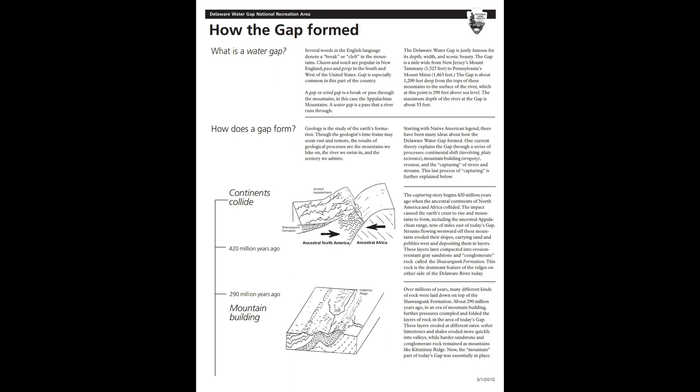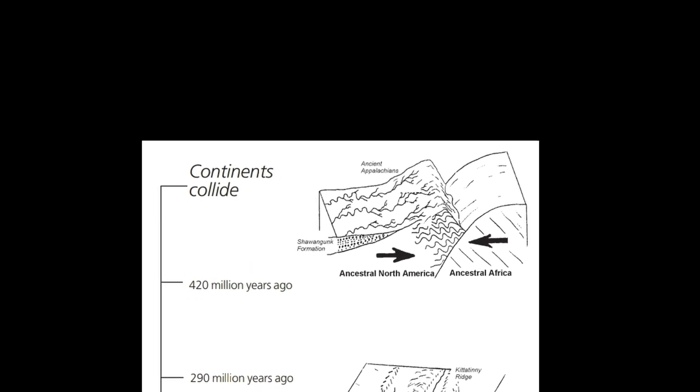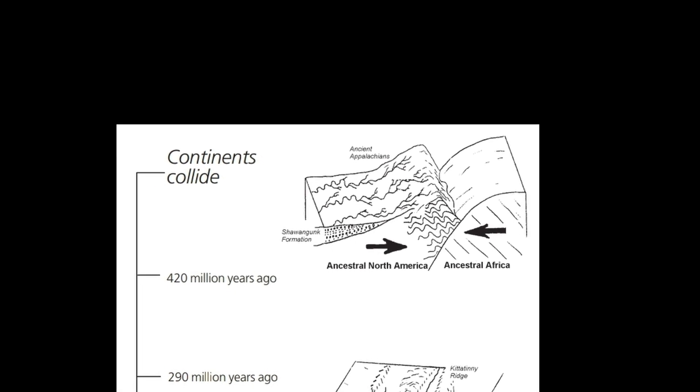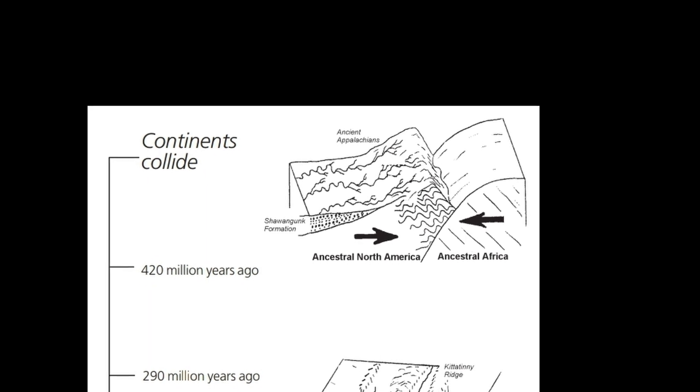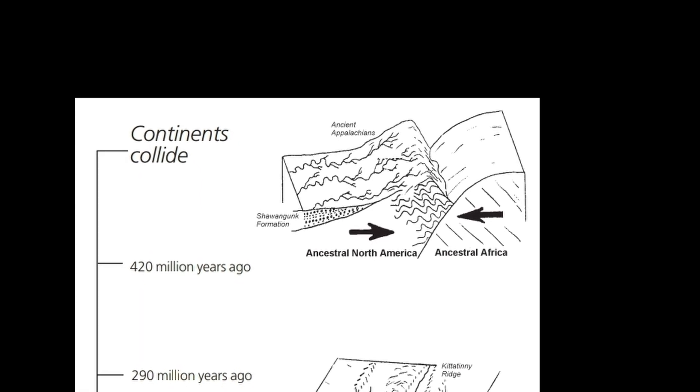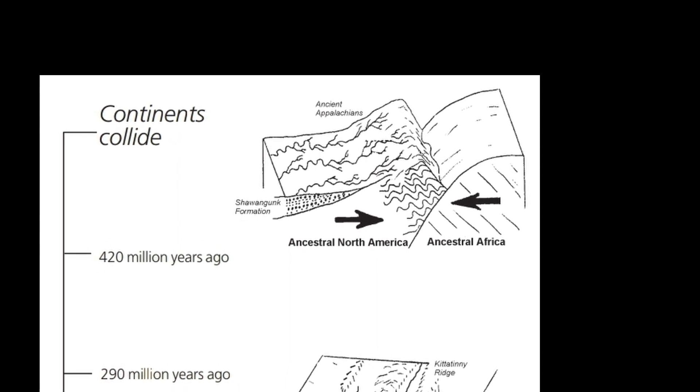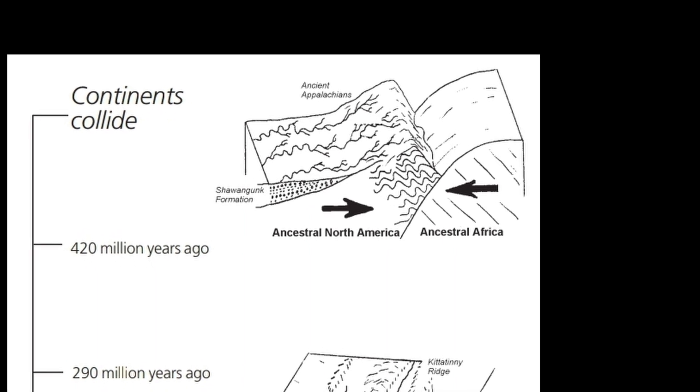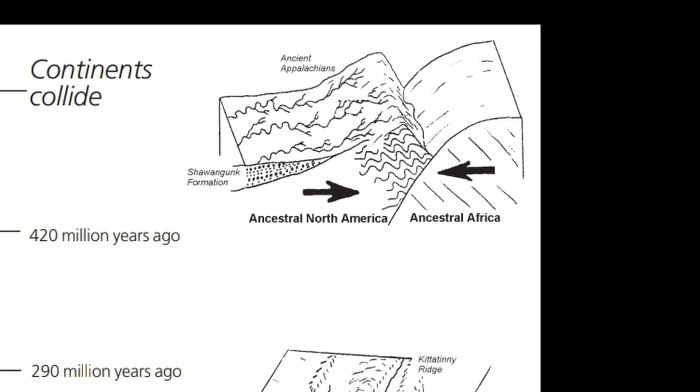The capturing story begins 420 million years ago, when the ancestral continents of North America and Africa collided. The impact caused the Earth's crust to rise and mountains to form, including the ancestral Appalachian range, tens of miles east of today's gap. Streams flowing westward off these mountains eroded their slopes, carrying sand and pebbles west and depositing them in layers. These layers later compacted into erosion resistant gray sandstone and conglomerate rock, called the Shawangunk formation. This rock is the dominant feature of the ridges on either side of the Delaware River today.